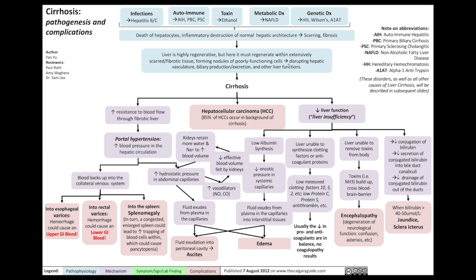This collection of poorly functioning cells will disrupt the hepatic vasculature, disrupt the production and excretion of bile, and interfere with other liver functions — this is when the liver becomes cirrhotic. There are two main physiological complications of cirrhosis: first, increased resistance to blood flow through the fibrotic liver; and second, reduced liver function, also known as liver insufficiency.